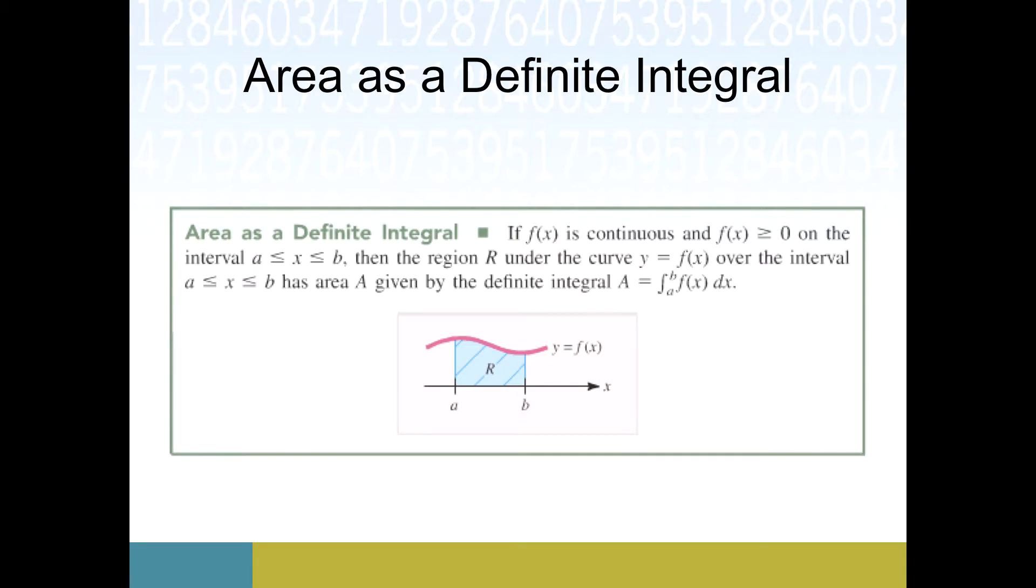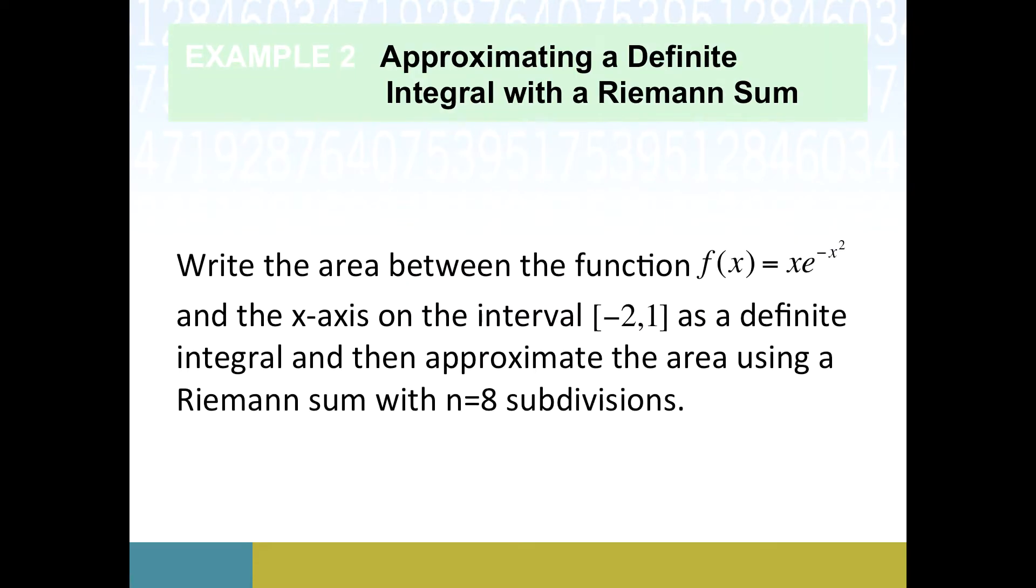For the time being we're going to draw upon our connection between this Riemann sum—remember that's the sum of these rectangular areas—and the notion of area under a curve. We've got this complicated looking function, the area between it, the x-axis, and on the interval negative two to one. We're going to write this as a definite integral, and then approximate that area with a Riemann sum using eight subdivisions, or eight rectangles.